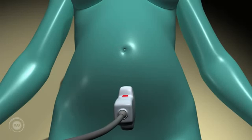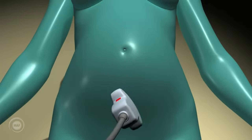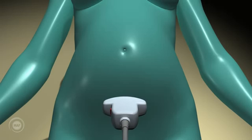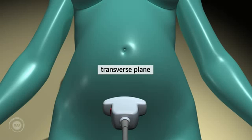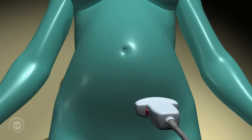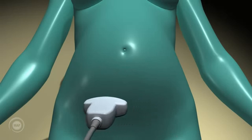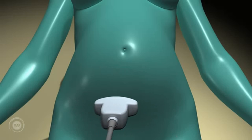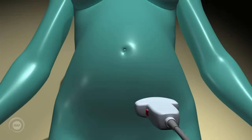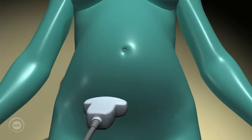Transverse. We then rotate the probe through 90 degrees so it's in the transverse plane. This means the long axis of the probe is lying across the mother. We then scan systematically across the mother's abdomen, taking slices crossways, giving left to right images.